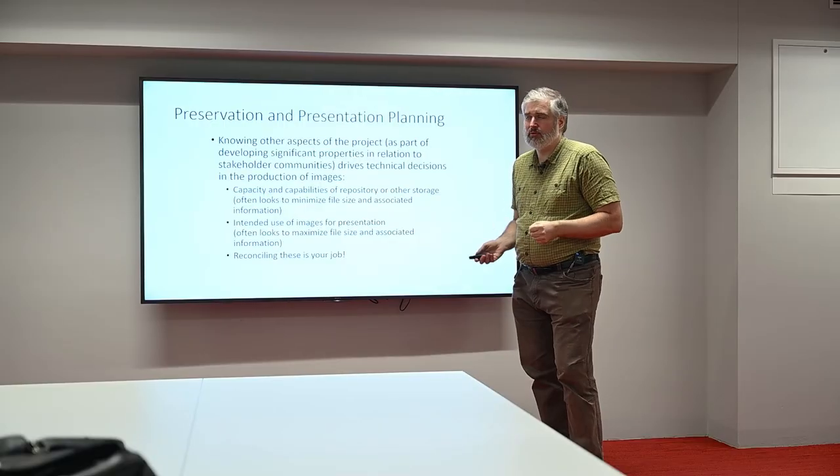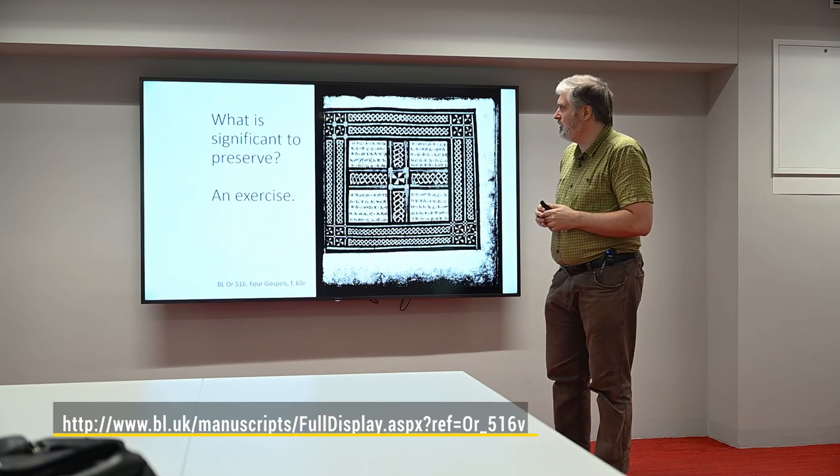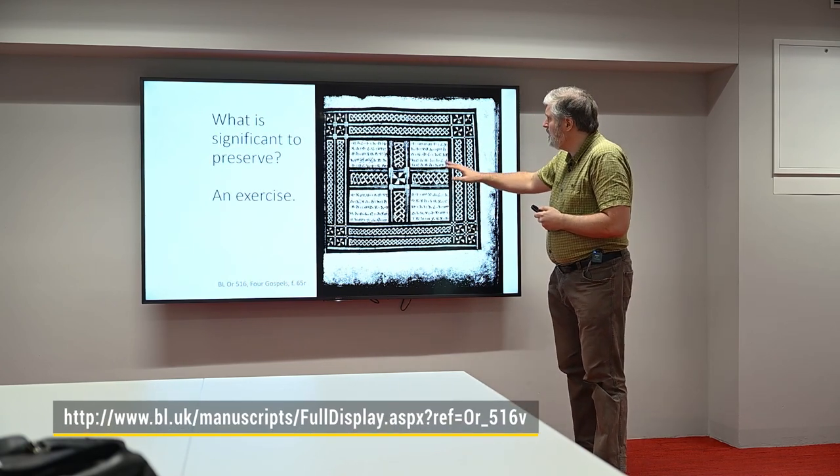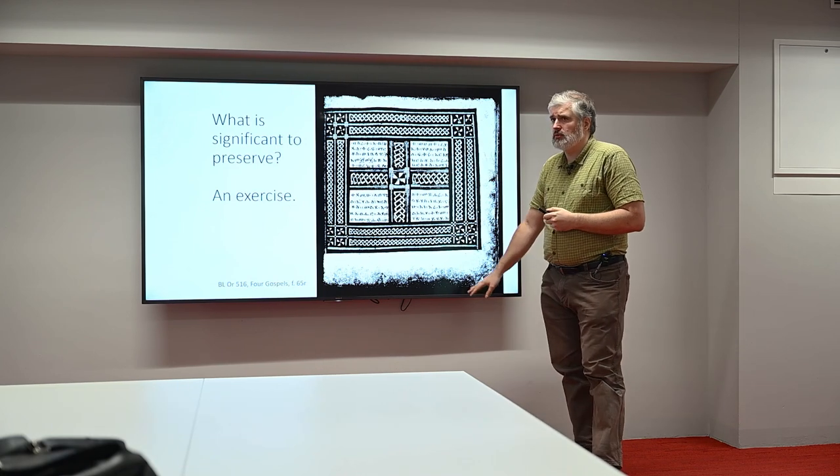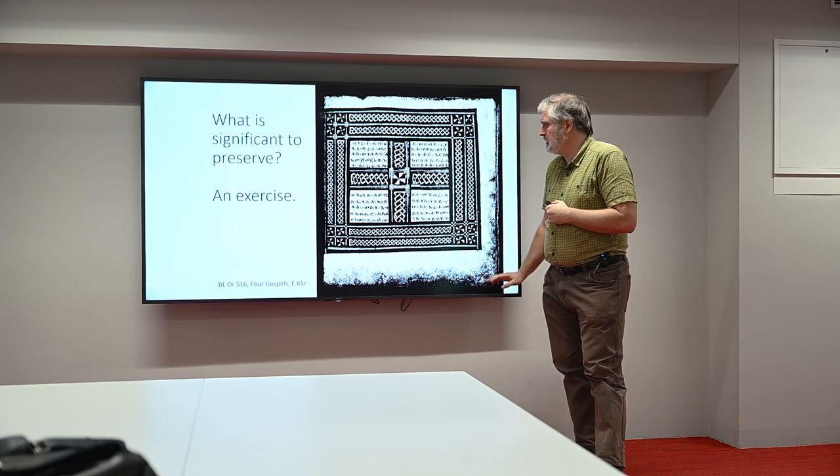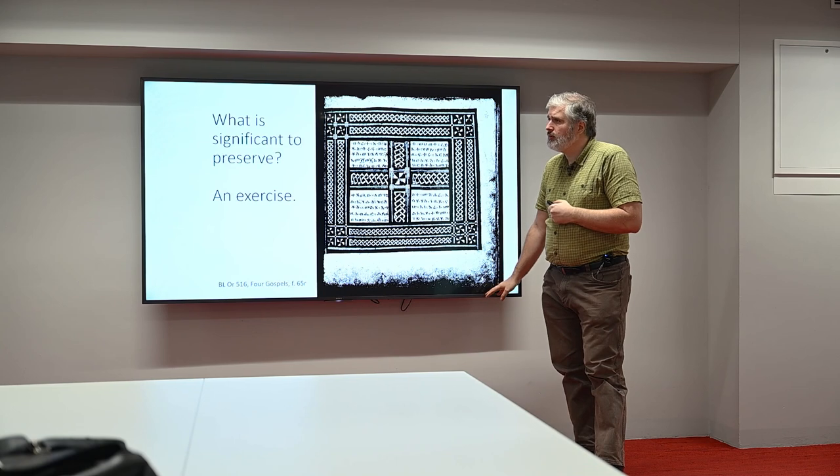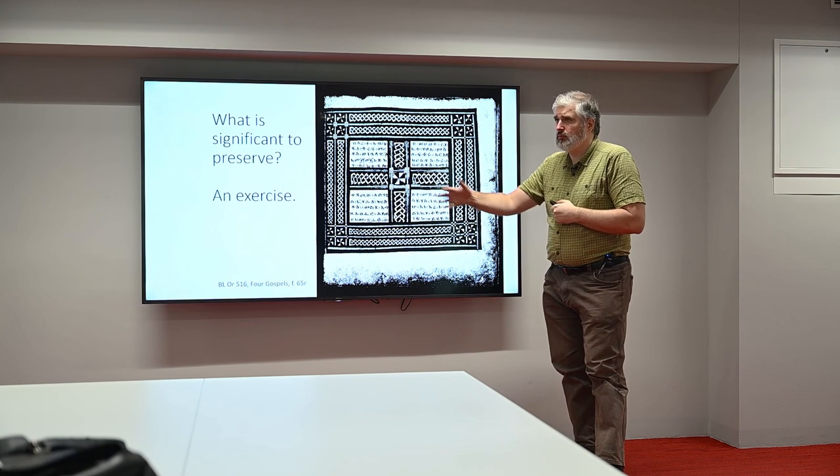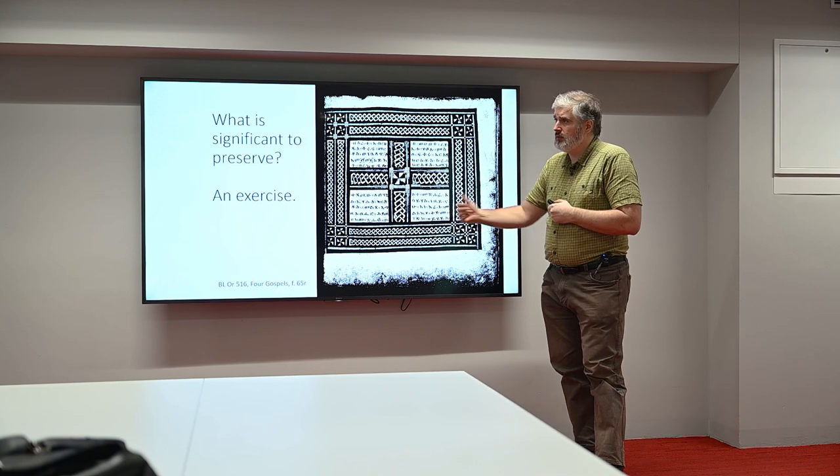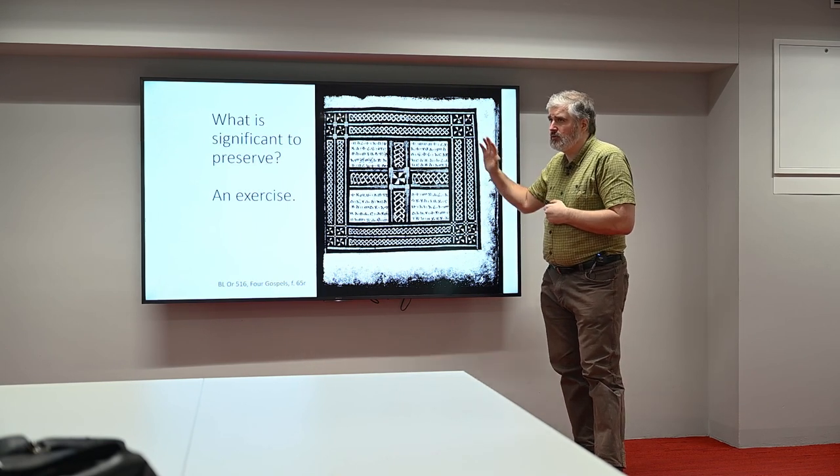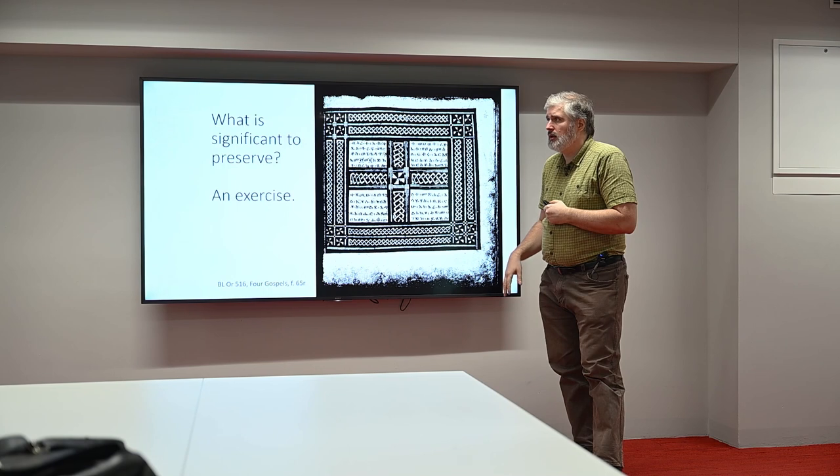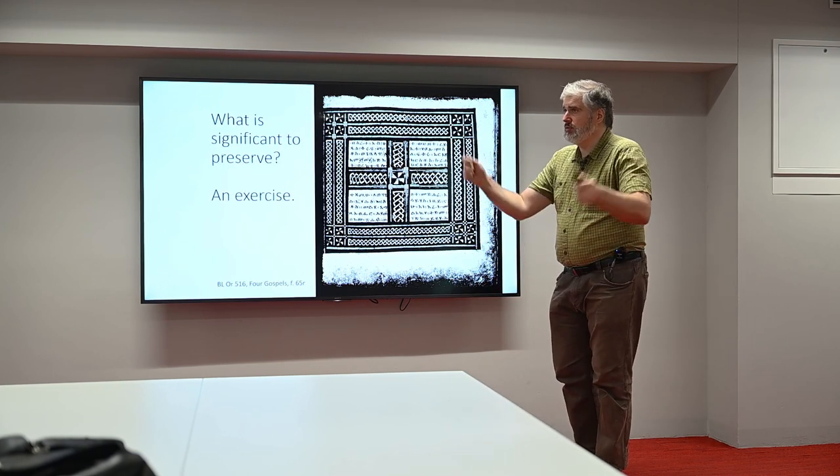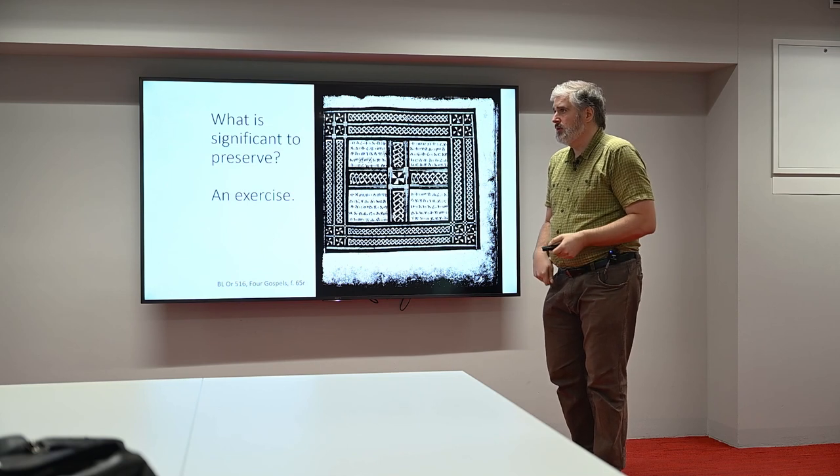So the first thing we should always be doing is thinking about what is significant to preserve. And I like this as an example because Ethiopian manuscripts, which is my specialty field, started out with microfilms of the manuscripts. They had a microfilm machine they took to Addis Ababa and they brought manuscripts down to Addis Ababa, they took microfilms back of them and then they sent the copies of the microfilms to various repositories in St. Louis, the Vatican, wherever else.